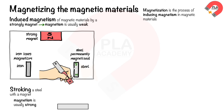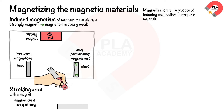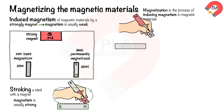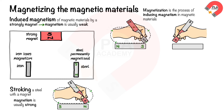Magnetizing by stroking with a magnet can produce stronger magnetism. A steel bar is stroked with the north pole of a magnet in one direction — the stroked end becomes a south pole and the other end becomes a north pole. When a south pole is stroked along the steel bar in the same direction, the stroked end becomes a north pole and the other end becomes a south pole.